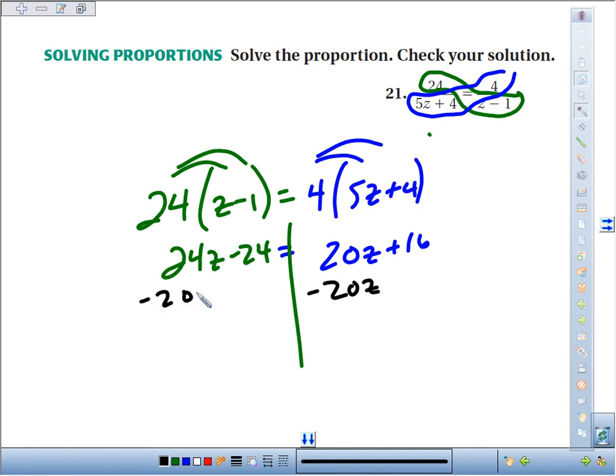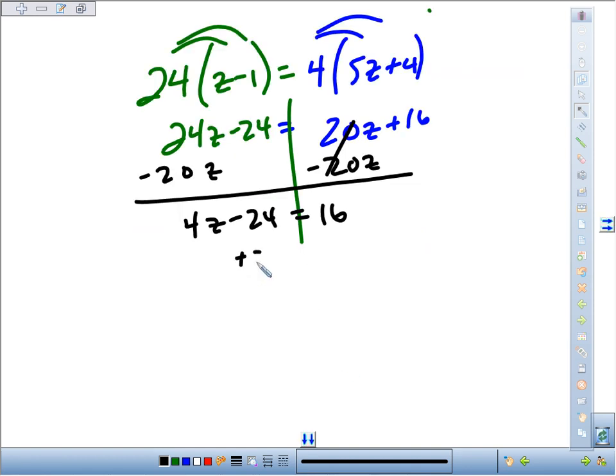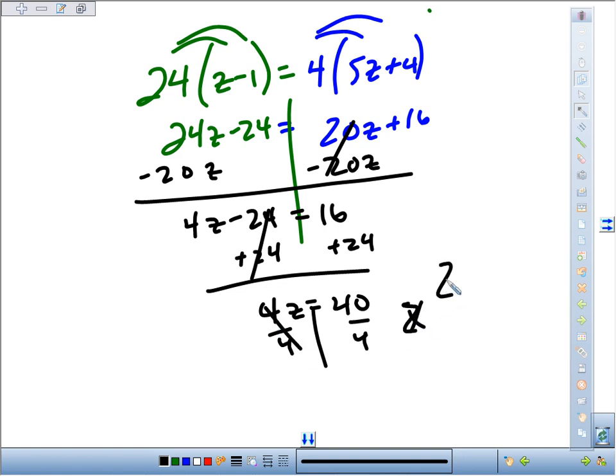Now we fence post - we'll add 24 to both sides. We get 4z equals 40. Dividing by 4, we find that z equals 10.